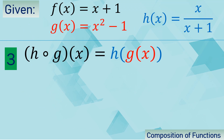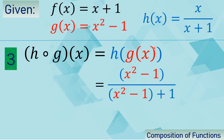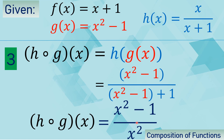The next example, we are looking for h of g of x. G of x will become the input of function h. That is why we use function h, replacing x with g of x, which is equal to x squared minus 1. We now simplify, and we can observe that negative 1 plus 1 is already 0. So we now have h composed of g of x, which is equal to x squared minus 1 over x squared.